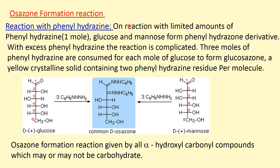Now coming to the osazone formation reaction, or reaction with phenylhydrazine. Carbohydrates like glucose, mannose, and fructose, when treated with a limited amount of phenylhydrazine, form a hydrazone derivative. But when they react with excess phenylhydrazine, the reaction is more complex. Three moles of phenylhydrazine are consumed for each mole of glucose to form glucosazone. Osazone is a yellow crystalline solid which contains two phenylhydrazine residues per molecule.